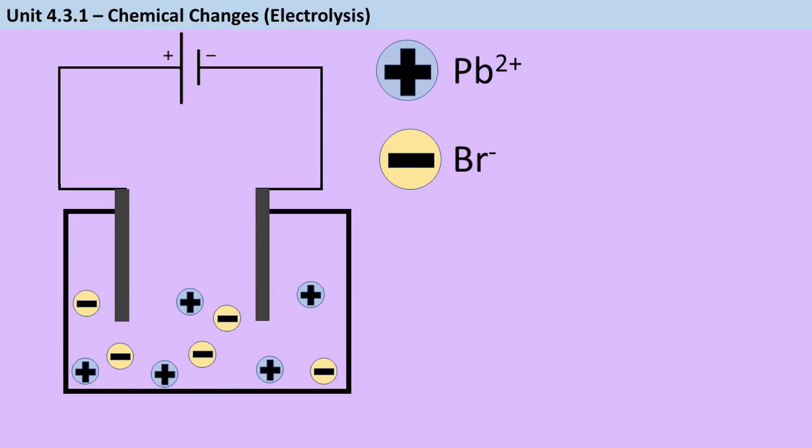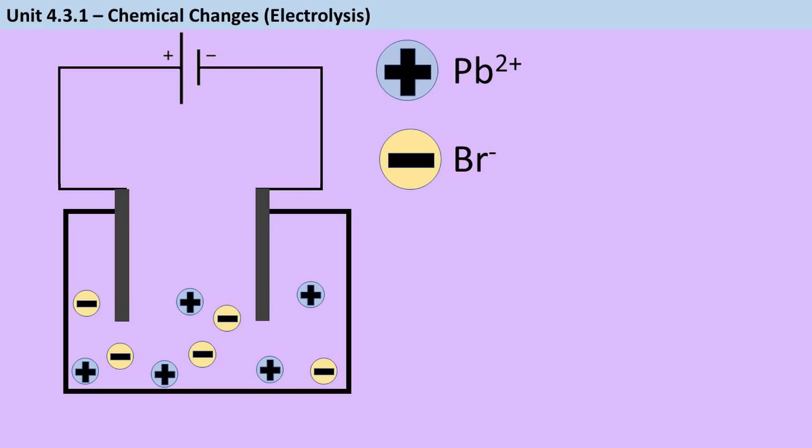Now just to make this a little bit easier to follow, I'm going to reduce the number of ions down to a small handful so you can see where the individual ions are going and what's happening to them. So we have these positive lead ions. We call these cations. Any positive ion is a cation. My chemistry teacher used to say a cation carries a positive charge. Kind of sad, but also kind of memorable.